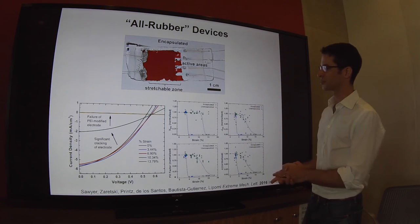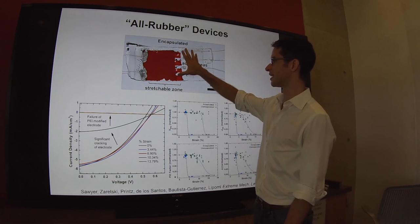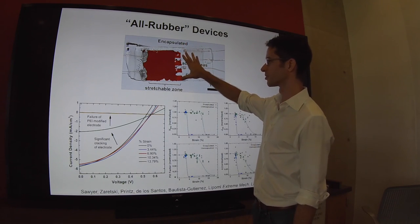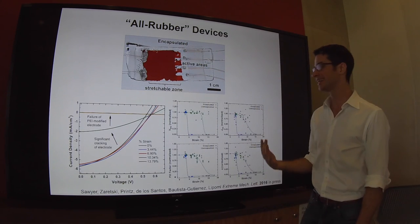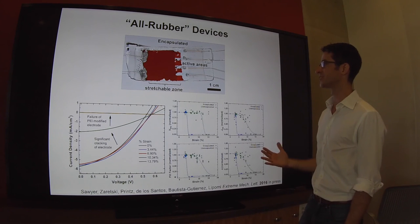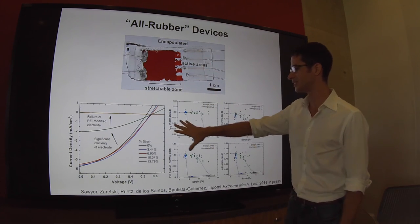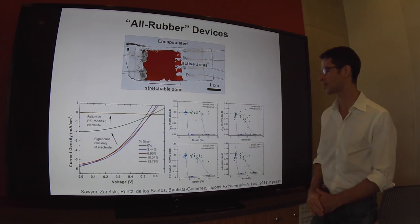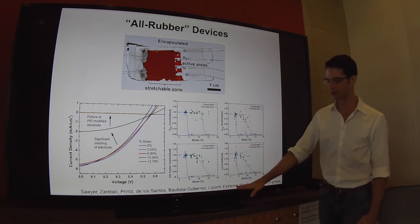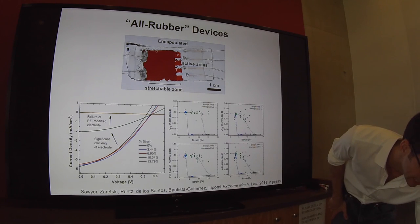Taking everything we learned from the stretchable applications, we can make the world's first all-rubber solar cell in which every component except for the fullerene is actually an elastomer. This is fully encapsulated and we see the evolution of the photovoltaic properties as a function of strain. You can find this in Extreme Mechanics Letters.